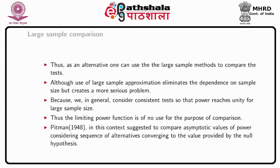Because we, in general, consider consistent tests so that power reaches unity for large sample sizes. Thus, the limiting power function is of no use for the purpose of comparison. Pitman, in the year 1948, suggested in this context to compare the asymptotic value of power by considering a sequence of alternatives converging to the value provided by the null hypothesis.